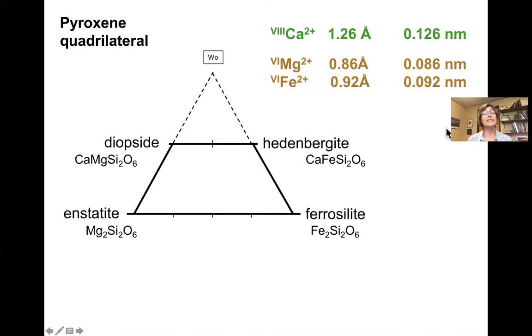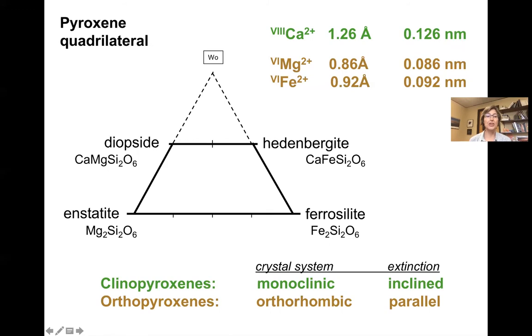This size mismatch creates a problem for our pyroxene lattice. The size mismatch means that we now have the conditions for two different crystal unit cells to form, one with the monoclinic shape and one with the orthorhombic shape. Notice clinopyroxene, monoclinic, and inclined extinction. I've put those all on the same line to try and help you remember that that's the case. Orthopyroxenes are orthorhombic, and they will turn out to have parallel extinction.